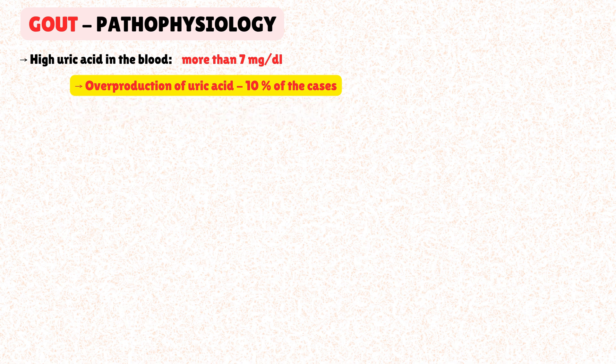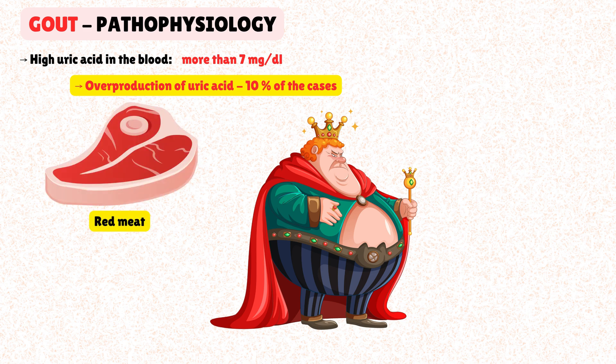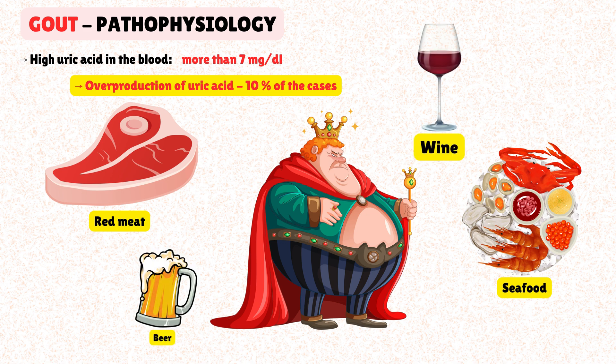Gout was once considered a sign of a high-class lifestyle. This is because the diets of monarchs and aristocrats were abundant in red meats, organ meats, and different types of seafood. They also consumed vast quantities of alcohol, particularly beer and fortified wines, which are known to increase the concentration of uric acid in the body.